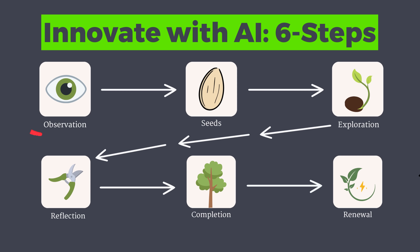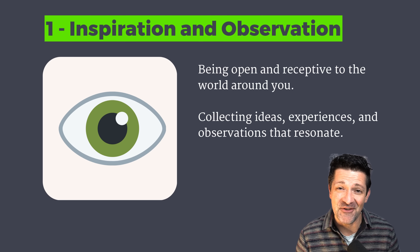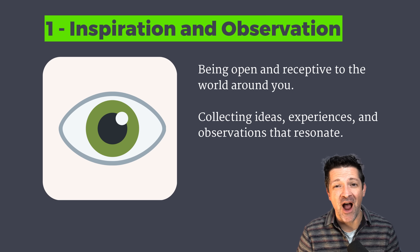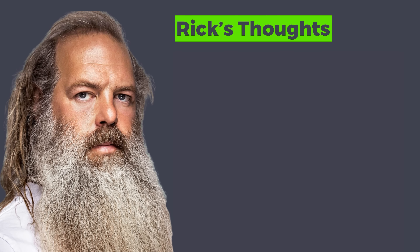This book, The Creative Act, is the best roadmap to the creative process I've ever found, and trust me, I've looked. The first step of the process is inspiration and observation. This includes being as open to the world around you as possible. Think of yourself as a camera — you want to set your aperture as wide as possible so you don't miss any good ideas.